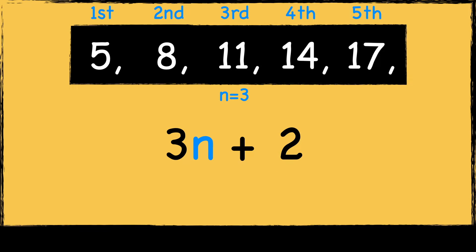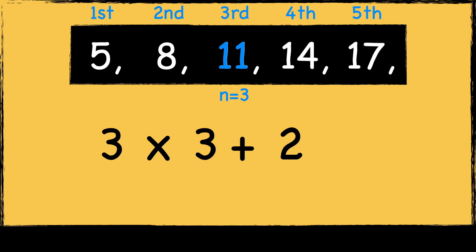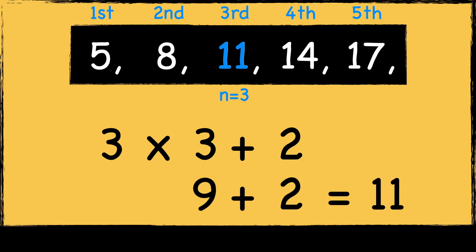Now we can test our expression to make sure it's correct. Let's test the third term, which we know should be 11. So as it's the third term, we're going to pop 3 into the expression instead of n. 3 times 3 is 9, and then add 2, which is 11. So the nth term expression was correct.